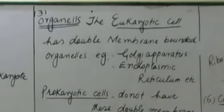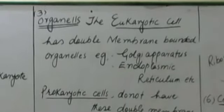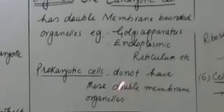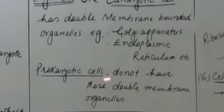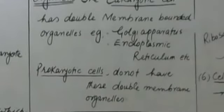Eukaryotic cells also have double membrane-bounded organelles such as mitochondria and endoplasmic reticulum. Prokaryotic cells do not have these double membrane-bounded organelles. This is the third difference.